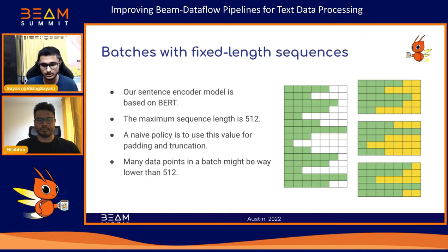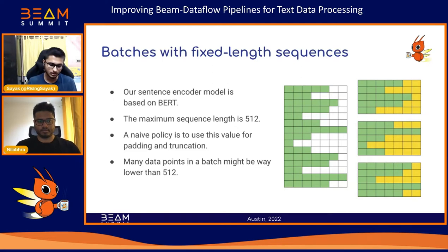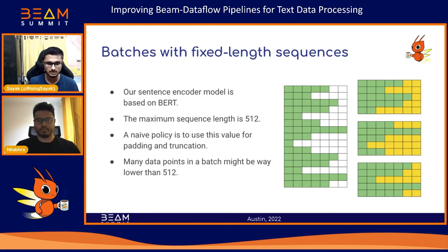What can be improved inside this pipeline? First, the pre-trained BERT-based model used to generate text embeddings accepts a maximum sequence length of 512. To make the model operate on batches of data — where most computational benefits come from — each batch needs to contain sequences of equal lengths. If we simply pad or truncate each entry to 512, it may be computationally wasteful because not all entries will be close to length 512; many will be much lower.